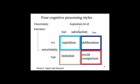When the agent is satisfied and not uncertain, the agent will repeat its decision from the previous time — there is no need to use more cognitive energy. When an agent is not satisfied but also not uncertain, the agent will deliberate and compare all possible options, and choose the option that leads to the highest level of satisfaction.